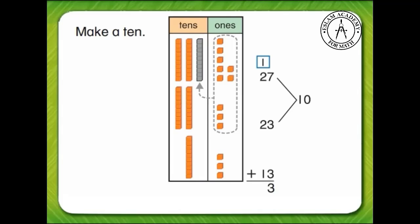Let's add our 10s now. One 10 plus two 10s plus two more 10s plus one 10 equals six 10s. Write 6 in the 10s place. 27 plus 23 plus 13 equals 63.